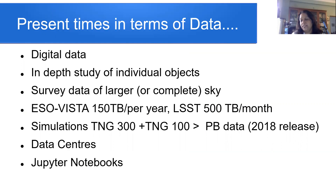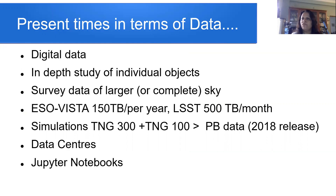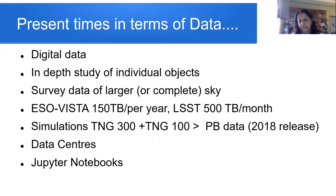What are the present types of data we have today? Most of the data we have today is digital data. Even data which was originally obtained as photographic plates has been digitized — we'll talk about that in a bit. The data could be either an in-depth study of individual objects, what we call targeted observations, or survey data of a larger or even complete sky. These datasets handle very large amounts of data; for example, the ESO VISTA survey handles about 150 terabytes of data per year.